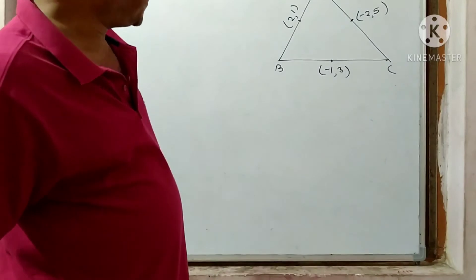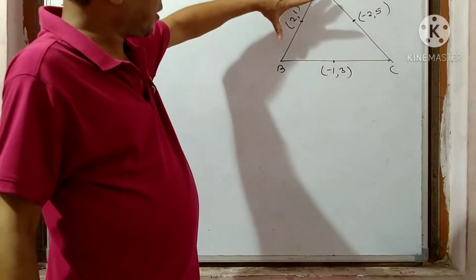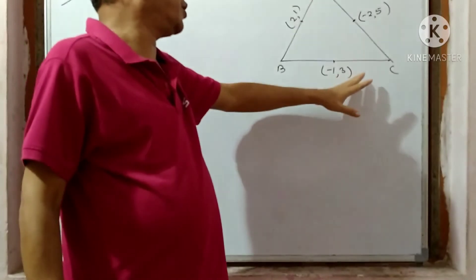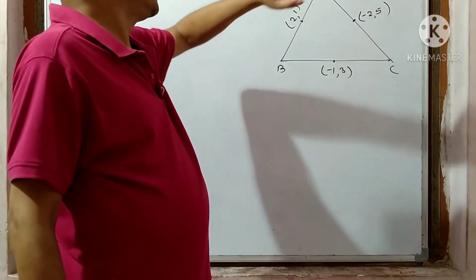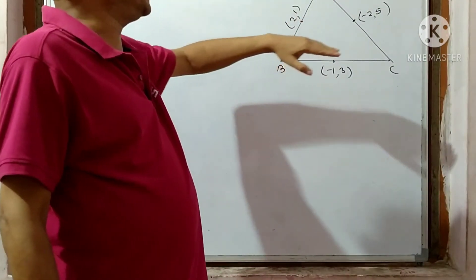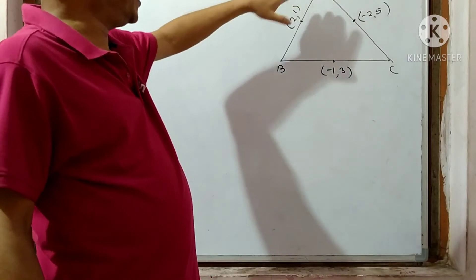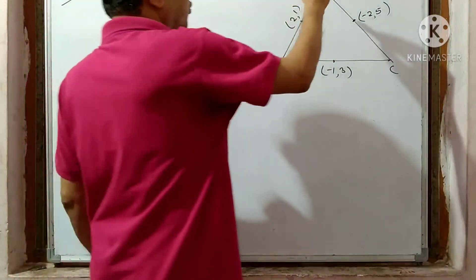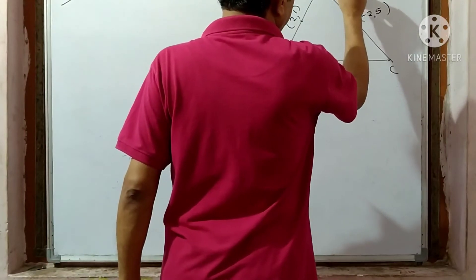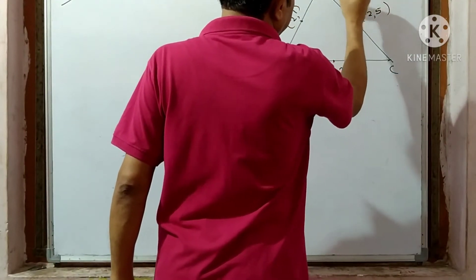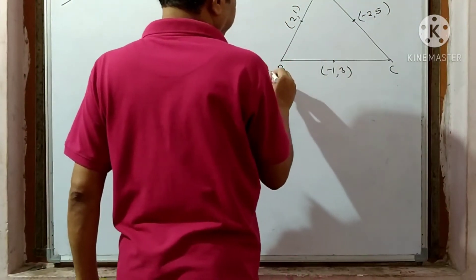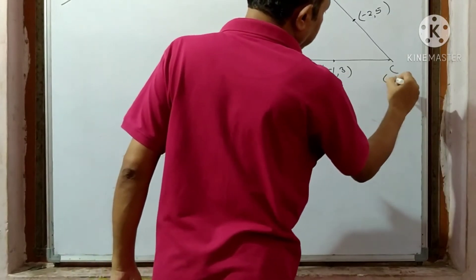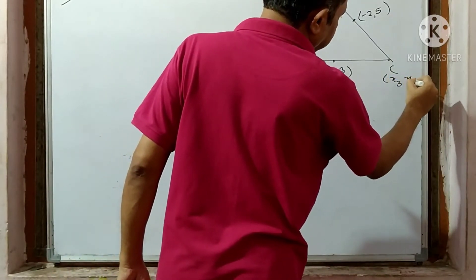The midpoints are given. Midpoints of the sides are (2, 1), (-1, 3), and (-2, 5). We have to find out the coordinates of the points A, B, C. Suppose the coordinate of point A is (x1, y1), that of B is (x2, y2), and that of C is (x3, y3).